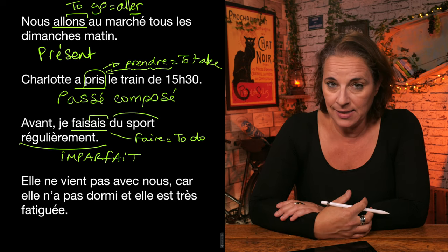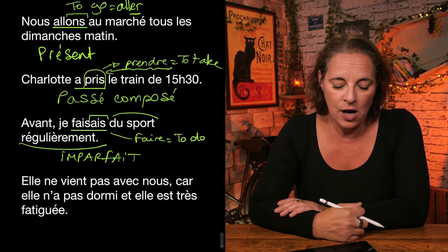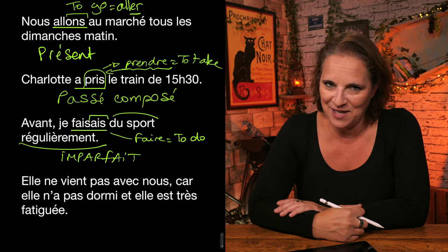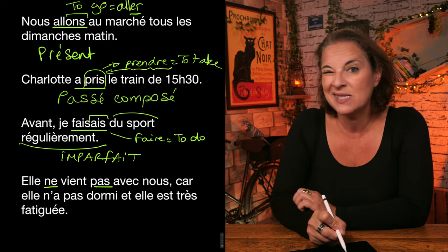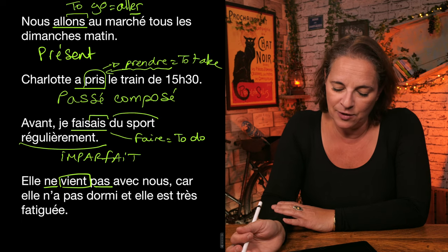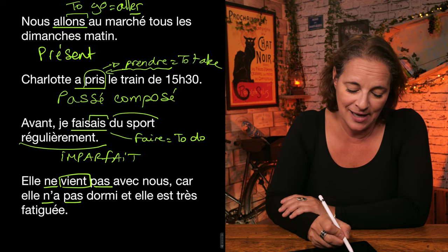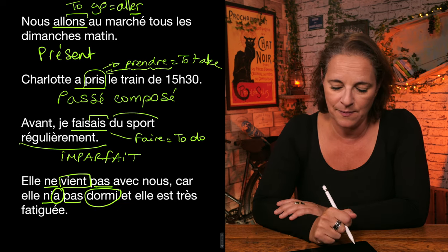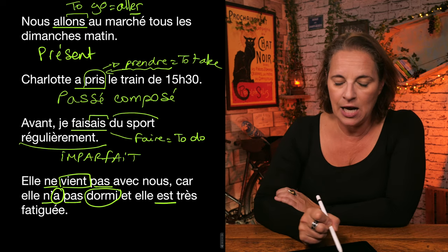So we are going to finish with the last one here, but there are more examples on your support guide. Elle ne vient pas avec nous car elle n'a pas dormi et elle est très fatiguée. So let's identify where the verb is. Elle ne vient pas. So we've got the negation, which means that the verb is most likely to be in the middle of that. Sure enough, it is. Elle ne vient pas avec nous car elle n'a pas dormi. And this is where the difficulty is. It has A and it has dormi because it's composed of two things. It has a negation in the middle. And then another verb, elle est très fatiguée.